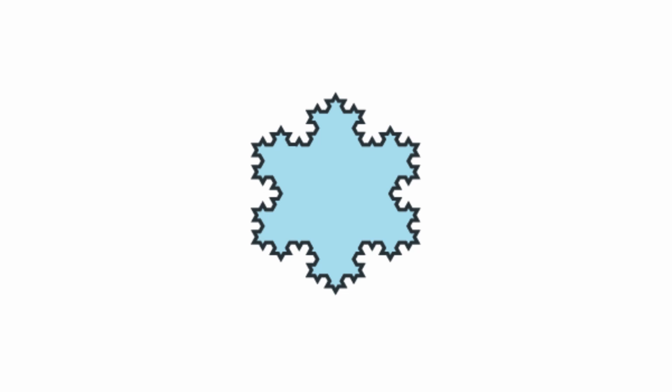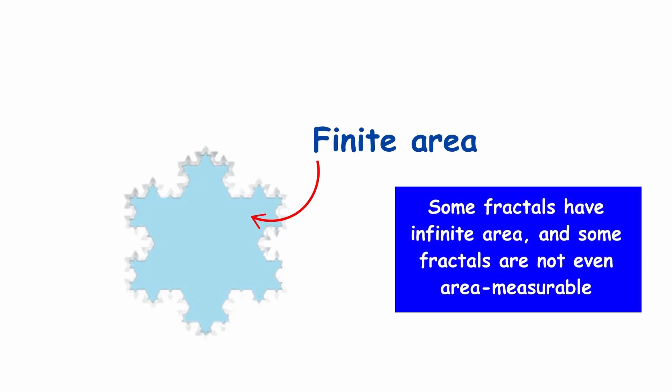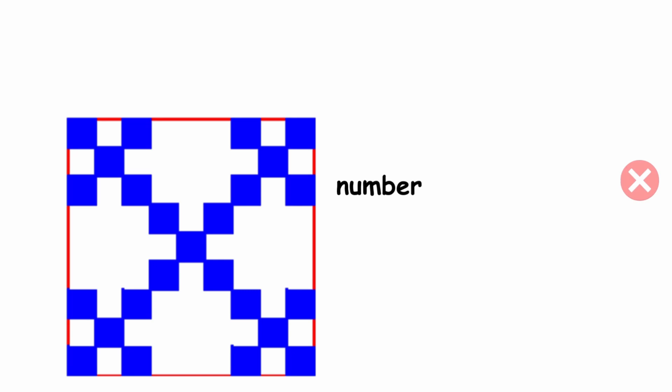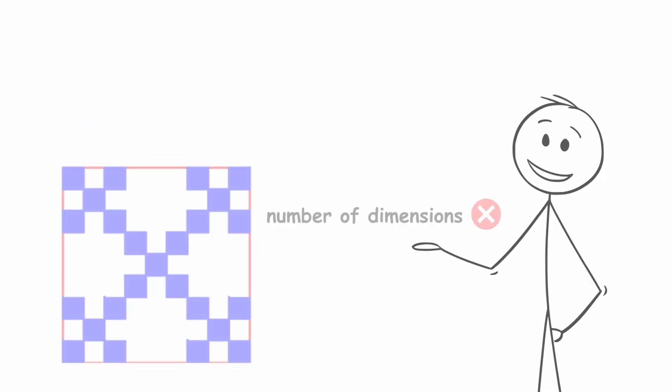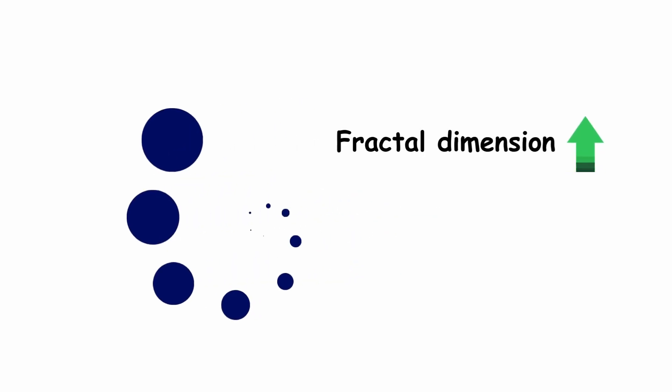Fourth, fractals have an infinite perimeter and a finite area. Fractal dimension does not refer to the number of dimensions in the traditional sense, but to how the object behaves as we scale it. The more the pattern repeats at different scales, the larger the fractal dimension.